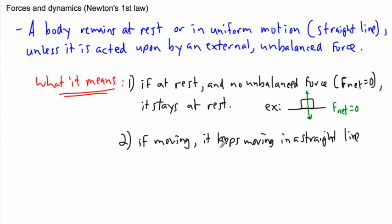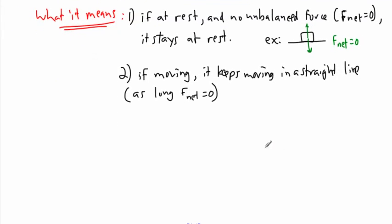As long as F_net equals zero, as long as the net force or the resultant force equals zero, then it'll keep moving in a straight line. So we could consider all sorts of examples.